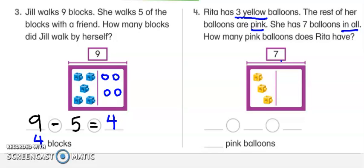We have the whole, we have all the balloons here. So that's seven, right? Now we have one part. And when we have one part, we do subtraction because we're trying to figure out the other part. So seven minus three equals sign.